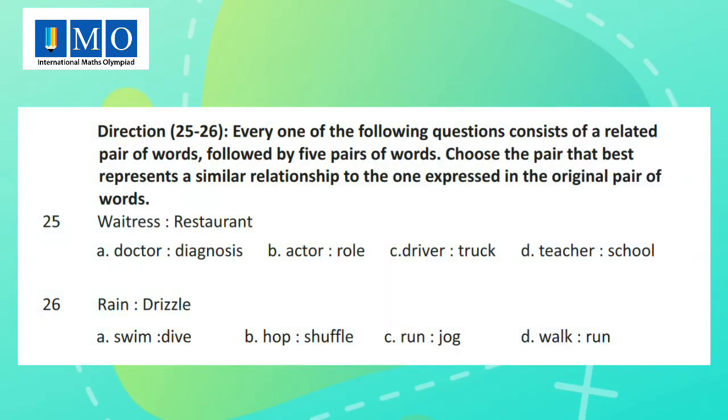Directions for number 25 and number 26 questions: Every one of the following questions consists of a related pair of words followed by five pair of words. Choose the pair that best represents a similar relationship to the one expressed in the original pair of words.